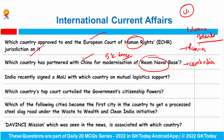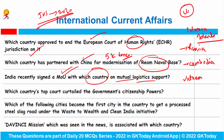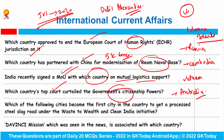India recently signed a Memorandum of Understanding with which country on mutual logistic support? India and Vietnam recently signed an MOU on mutual logistic support when our Defence Minister Rajnath Singh was on a visit to Vietnam. Additionally, the defence ministers signed a joint vision statement on India-Vietnam Defence Partnership towards 2030, which will enhance the scope of defence cooperation. Which country's top court curtailed the government's citizenship powers? Australia's highest court made a landmark ruling curtailing the government's citizenship power, restoring Delhi Alexander's Australian citizenship, which had been illegally cancelled last year by then Home Affairs Minister Karen Andrews.